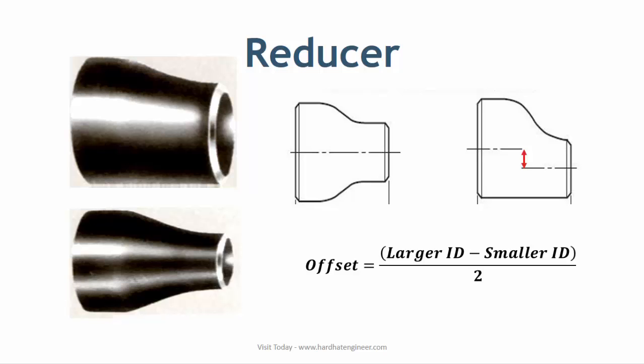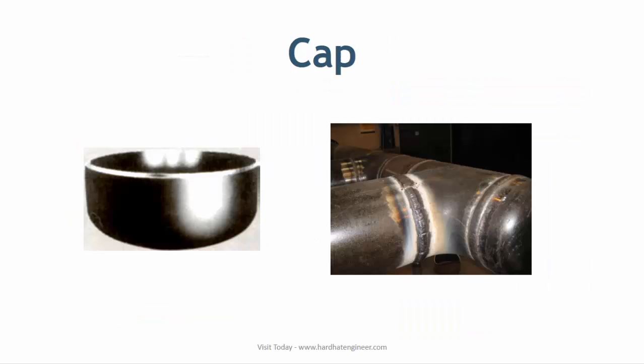Pipe caps are used at the dead end of the piping system. By welding a pipe cap, you can eliminate any chance of leakage during operation. It is cheaper and safer compared to a flange joint if there is no immediate need for a future connection. However, dead ends are susceptible to corrosion, so you have to check the thickness at regular intervals.